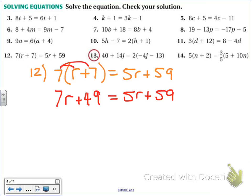So now I don't see any parentheses. I don't see any fractions. Let's combine like terms. Now, of course, when I combine like terms, we always look on the same side. So just the left, I have 7r plus 49. No like terms just on the left. On the right, I have 5r plus 59. Those are not like terms, just on the right.